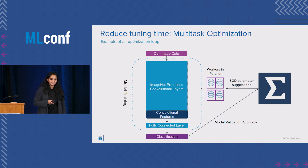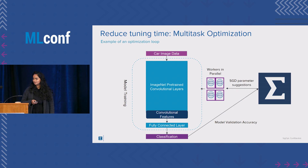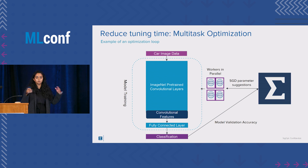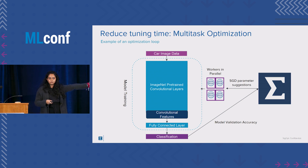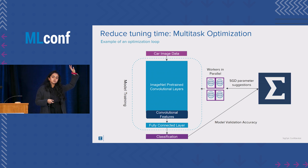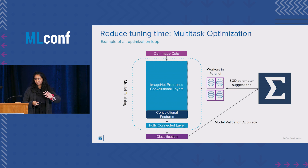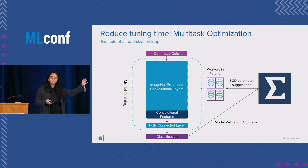Moving on to multitask optimization, which is probably the one most people here have not heard of. Let's take a step back and talk about what a hyperparameter loop looks like. We have SIGopt, which is our hyperparameter platform used to tune our models. It provides suggestions for stochastic gradient descent, we take those suggestions, run through a training loop, and return our model's validation accuracy. We'll be doing this in parallel because tuning takes a long time.